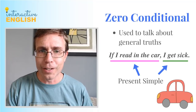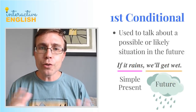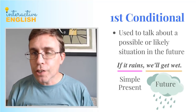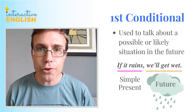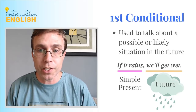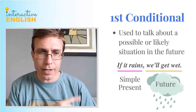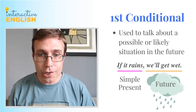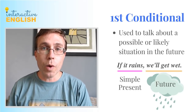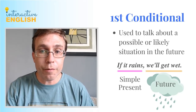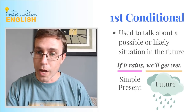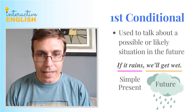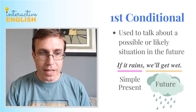Now let's look at the first conditional. We use the first conditional to talk about a possible or likely situation in the future. So we're talking about the future. My sentence: 'If it rains, we'll get wet.' So 'if it rains' — that's my condition, simple present. 'We will get wet' — that's the result, my main clause, and that's where I'm using the future. Simple present, future. It makes sense.